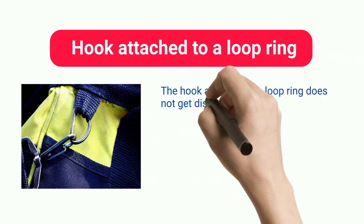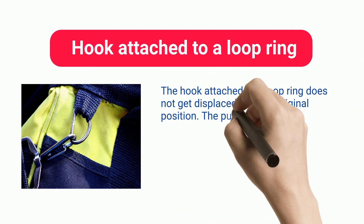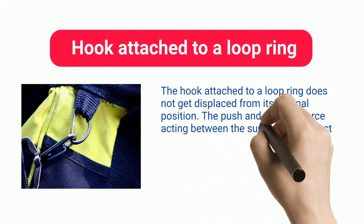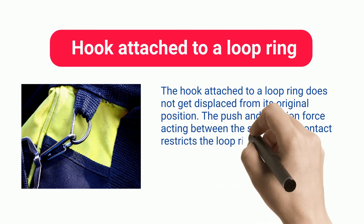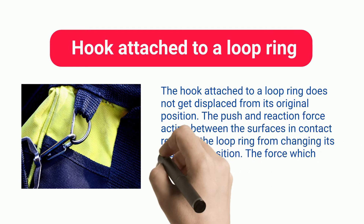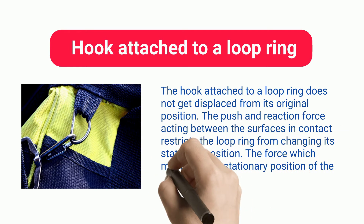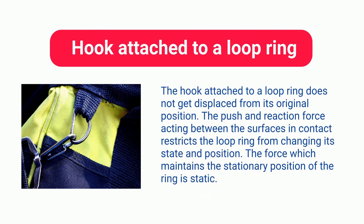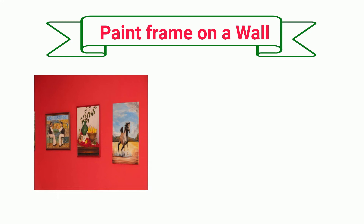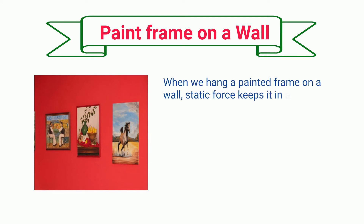The hook attached to a loop ring does not get displaced from its original position. The push and reaction force acting between the surfaces in contact restricts the loop ring from changing its state and position. The force which maintains the stationary position of the ring is static force.